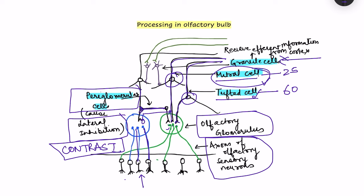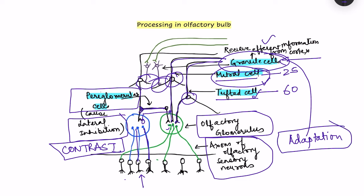Granule cells receive efferent information from the cortex and cause inhibition of the mitral and tufted cells. This is responsible for adaptation — the cortex sends information back via granule cells to inhibit the mitral cells, thereby decreasing the information reaching the cortex about a particular odorant.